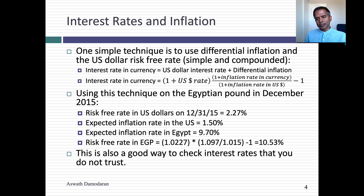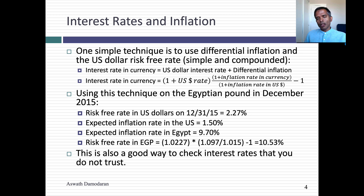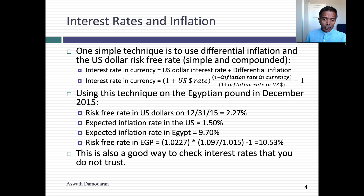Let me give a simple example. Suppose you want to get a risk-free rate in Egyptian pounds. There were no 10-year government bonds denominated in Egyptian pounds in December of 2015. So here's what I did: I started with the US dollar risk-free rate — the T-bond rate — let's say it's 2.27%. To get a risk-free rate in Egyptian pounds, I need two numbers: an expected inflation rate in US dollars, let's say 1.5%, and an expected inflation rate in Egypt — let's use last year's inflation — let's say it's 9.7%.